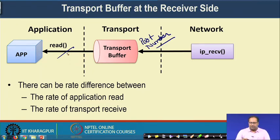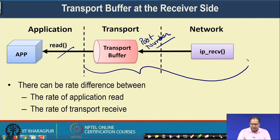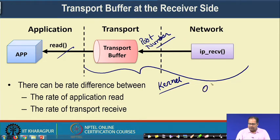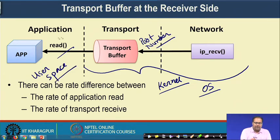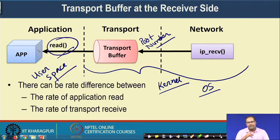The transport layer protocol stack implementation is inside the kernel, part of the operating system, whereas the application is written in user space. The frequency of the read call is managed by the application, which uses socket programming — discussed in detail later — to read data from the transport layer buffer.